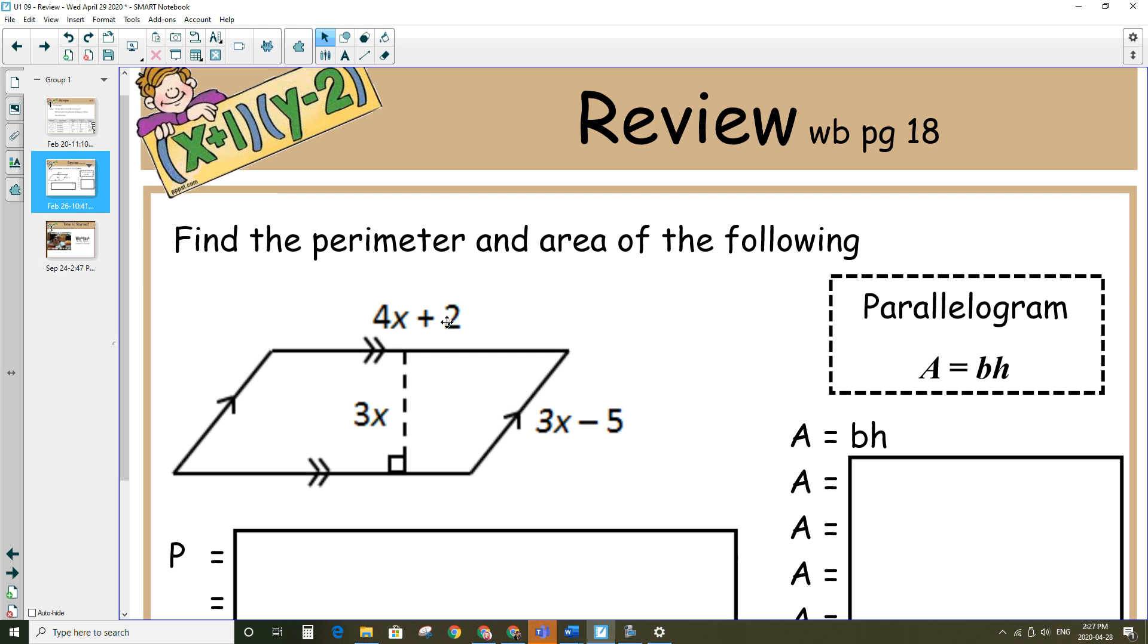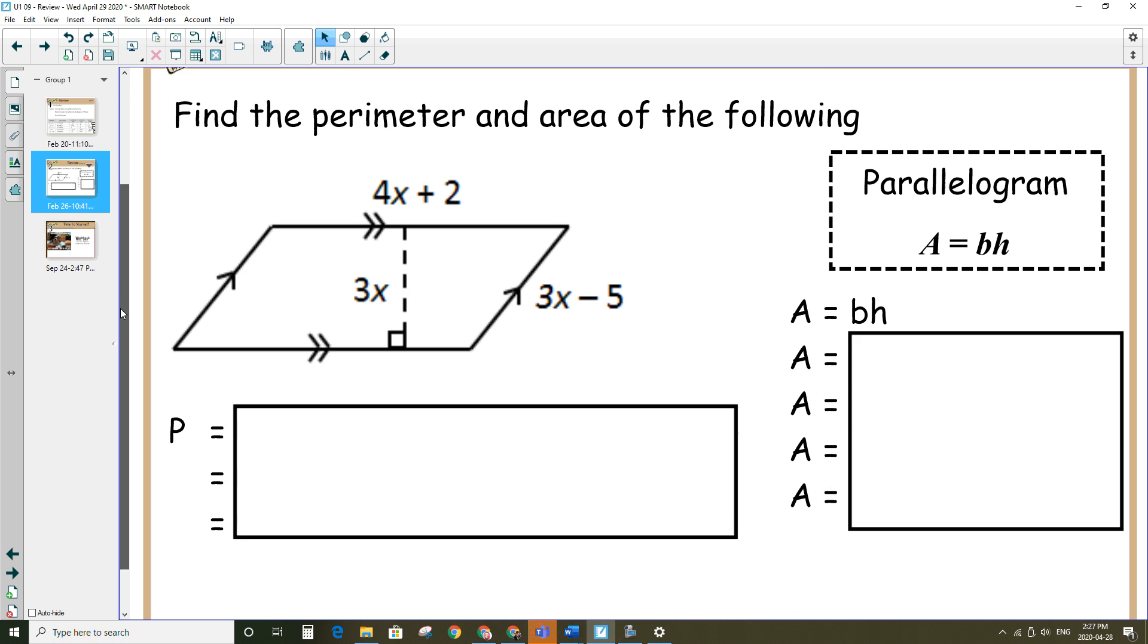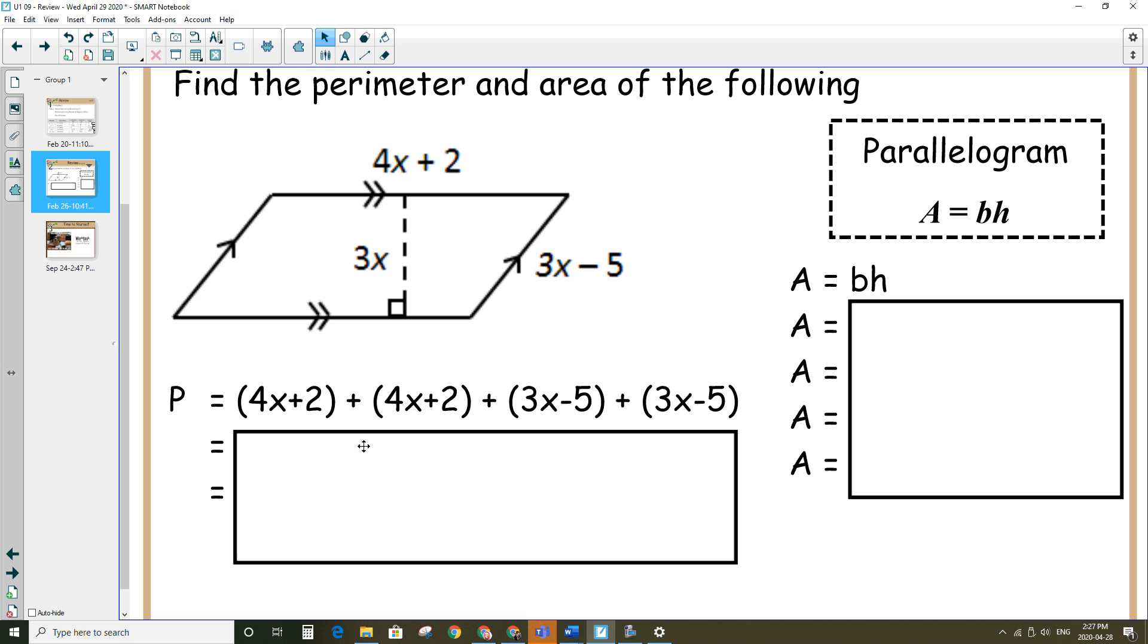So to find the perimeter, we're going to add up all the 4 different sides, which is what I've done here. And I put them into brackets. We can remove the brackets in the next line. We have a positive 1 in front of each of those brackets, so it's not going to change anything inside each of the brackets when I remove them. So I've simply just removed the brackets.